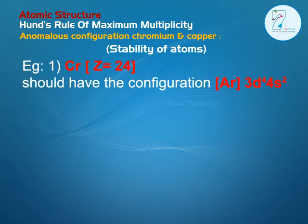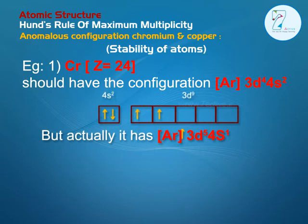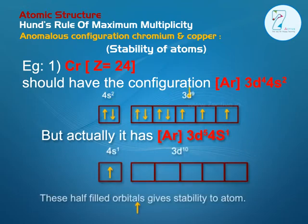Example 1: Chromium, atomic number Z equals 24, should have the configuration Argon 3d4 4s2, but actually it has Argon 3d5 4s1. This configuration gives half-filled orbitals, which give stability to the atom.